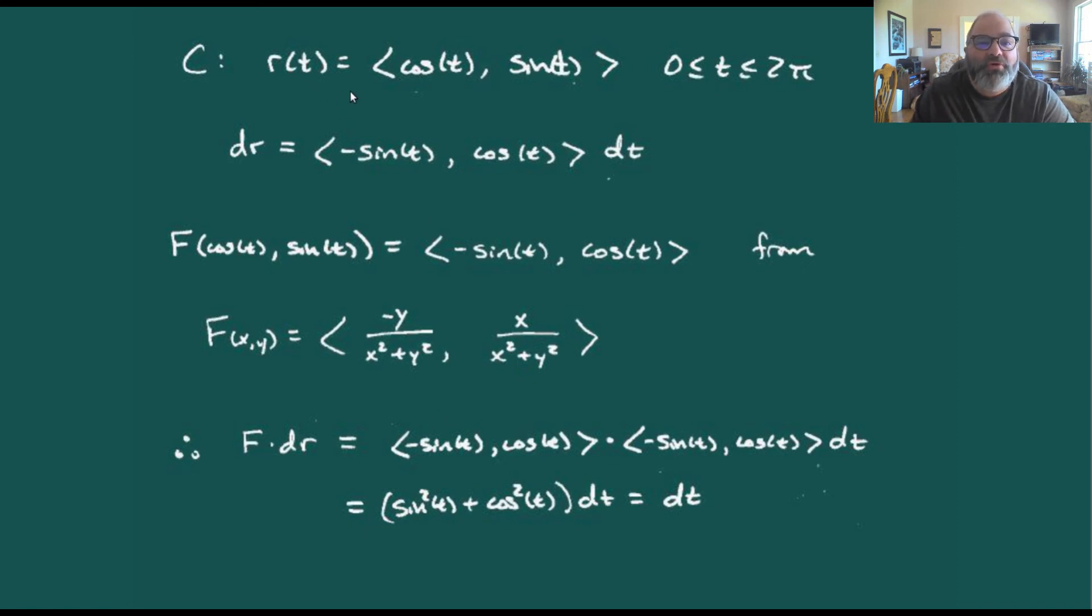We can parameterize that as cosine t, sine t, with t going from zero to two pi. We compute our dr, so our derivatives. Derivative of cosine gives us minus sine, derivative of sine gives us cosine, with dt on the outside.